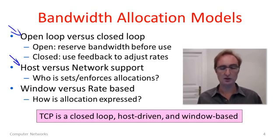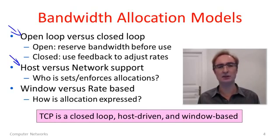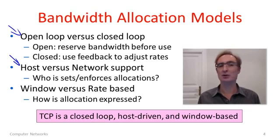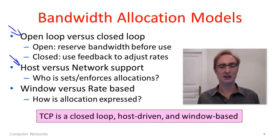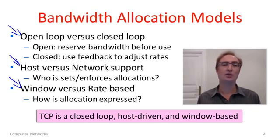We could have allocation mechanisms that are more host-based or more network-based — by which I mean which party is responsible for setting and enforcing the allocation. If the network is enforcing it, the network's really in control and users can't undermine the network. If the hosts are setting the bandwidth allocations, then they better behave in a good way for the network or they might have an adverse effect on the whole network. We can also have an allocation expressed either in terms of the size of the sliding window, or as an absolute rate such as one packet per second. Both of these provide ways of controlling the amount of network capacity used by a sender.